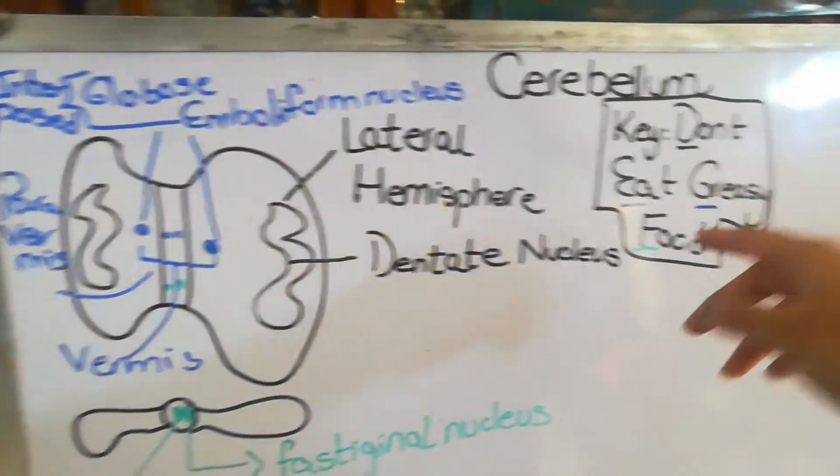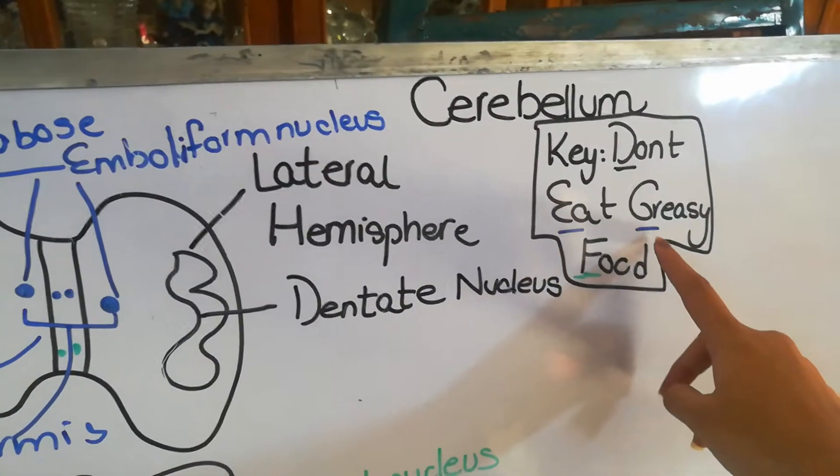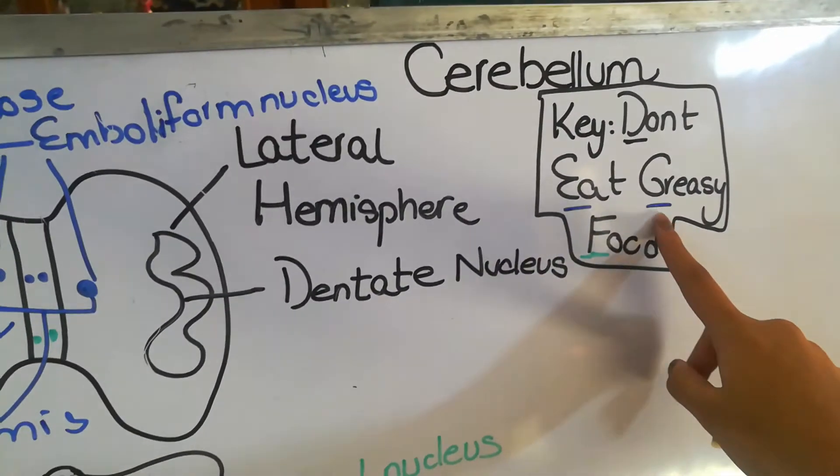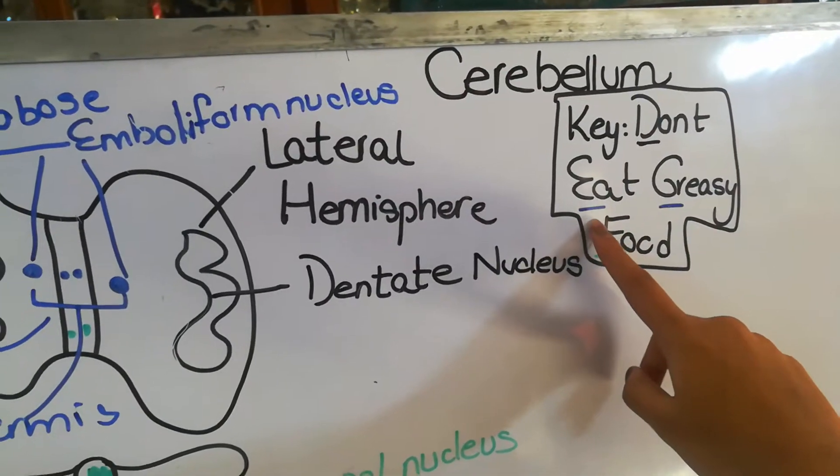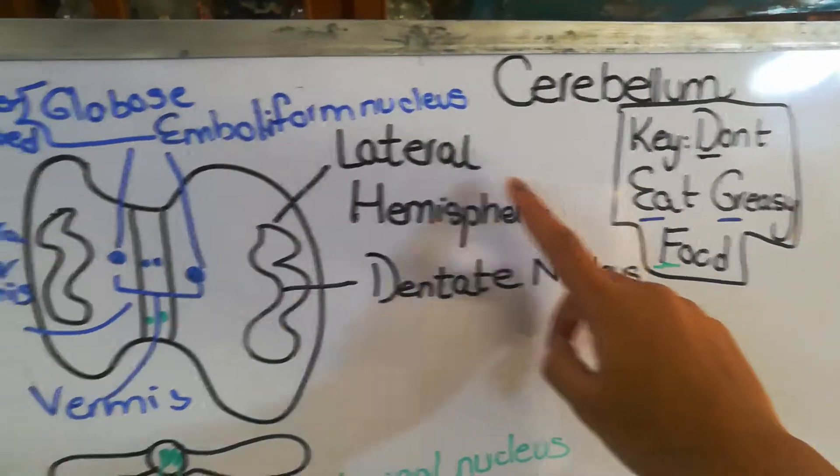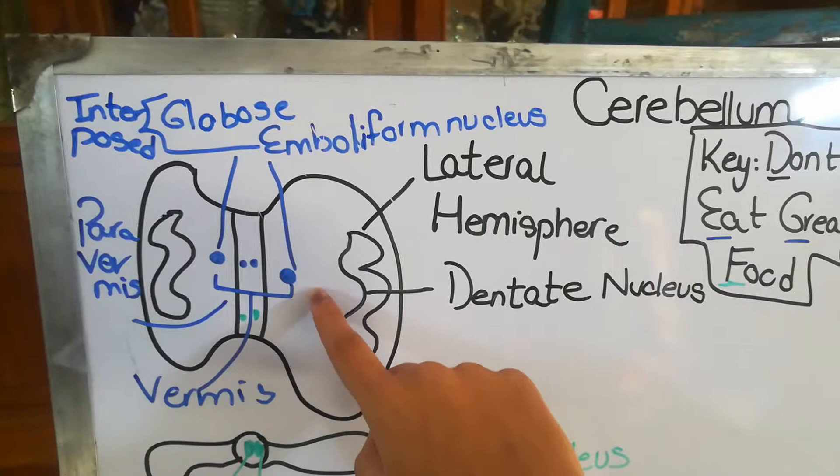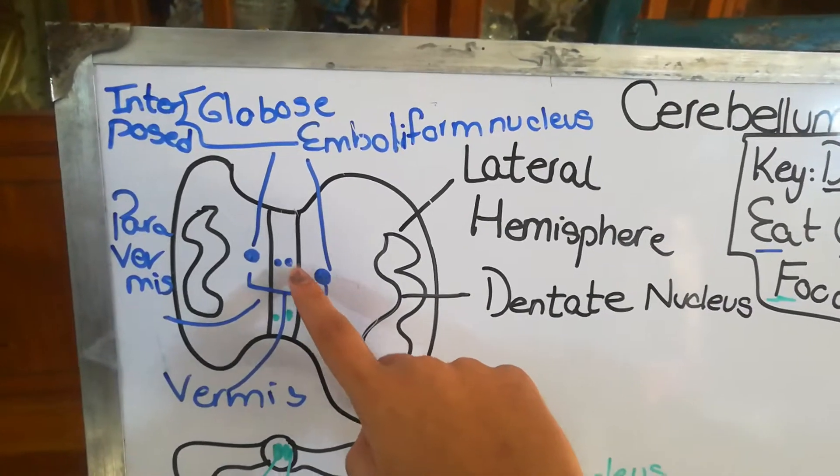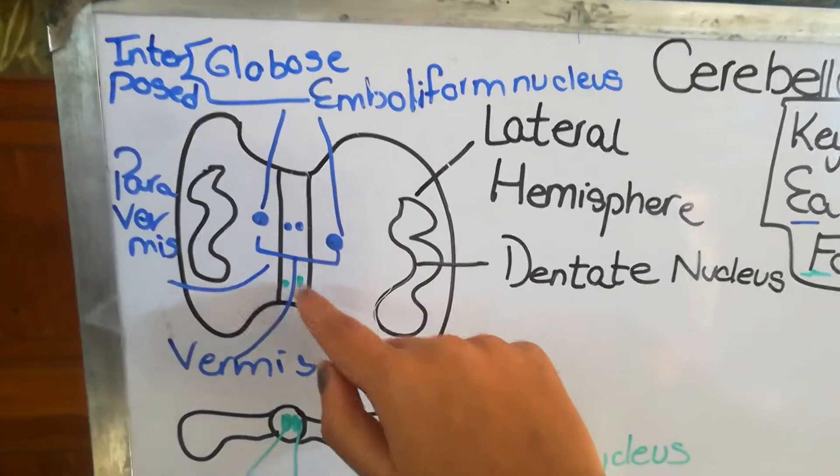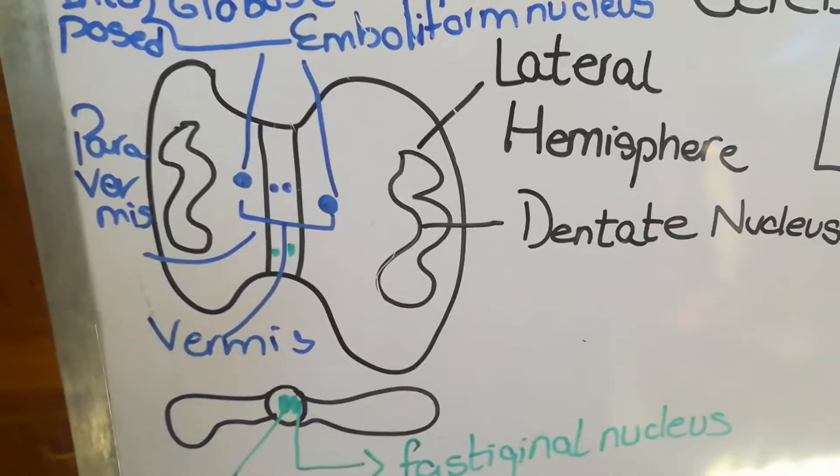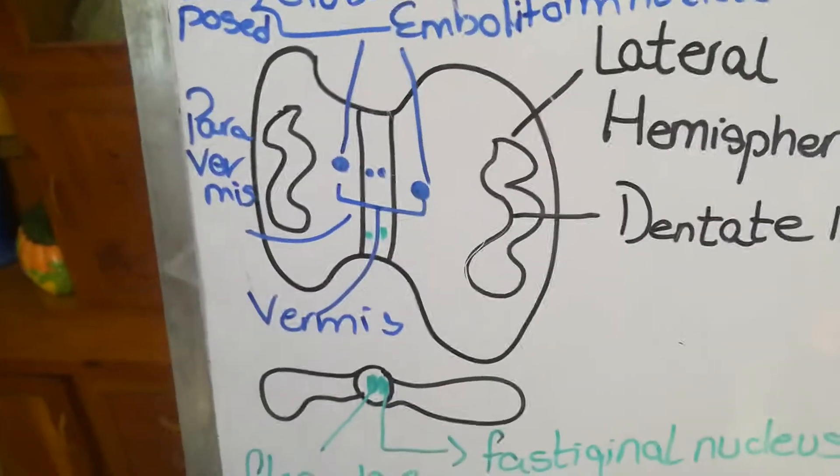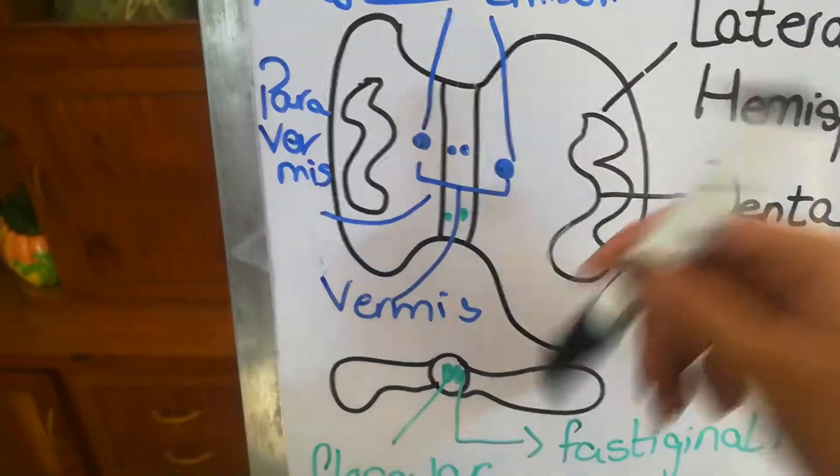The second nuclei from our keyword are 'eat' and 'greasy,' so they start with E and G. E comes before G, so the emboliform nucleus comes first, and this is the globose nucleus. These two are circular in shape and appear blue or purplish under a microscope.